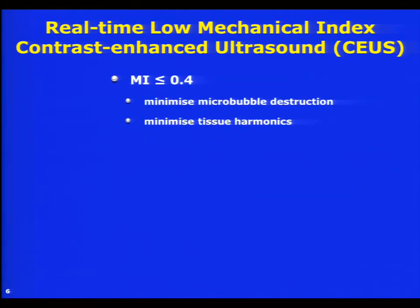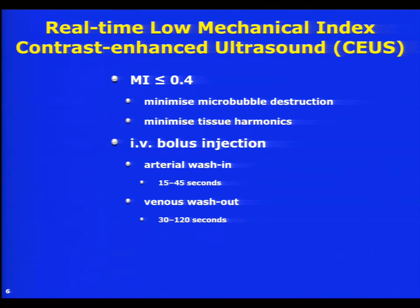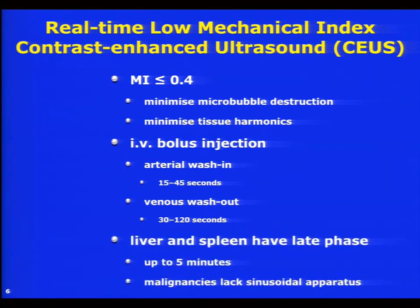I'd like to show you just one example of a patient in whom this was useful. Just to explain the background: we work at a low MI because we don't want to destroy the bubbles — they're very sensitive to high pressures and it breaks them. We generally use a bolus injection. The volumes used are very much smaller than are used in CT and MR — typically 2.5 or even half that ml for an individual bubble study. And then we get an arterial wash-in and a venous wash-out phase, which we track, usually just by eye, but it's possible to do it quantitatively as well.